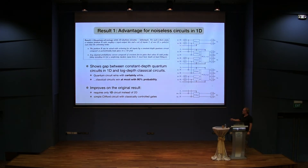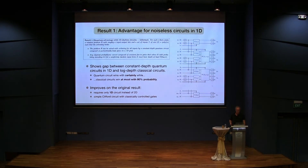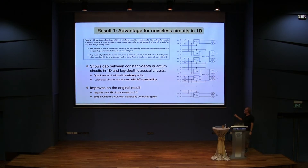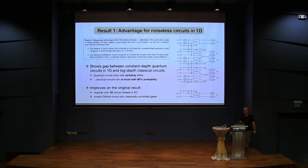Classical constant-depth devices cannot win with more than 90% probability. This result itself is an improvement on the original proposal in that it goes from a 2D setup of interactions — where you have nearest neighbors on two dimensions — to one dimension, and that makes it a little bit simpler. And when we factor in noise resistance, this will be important.